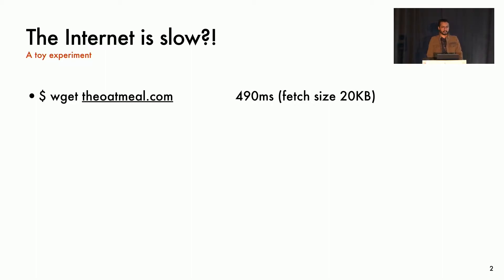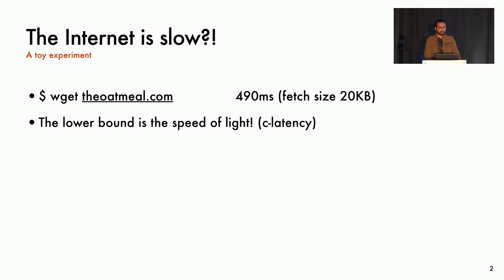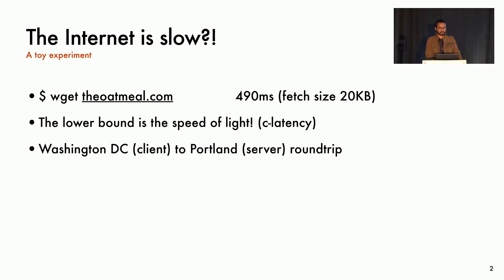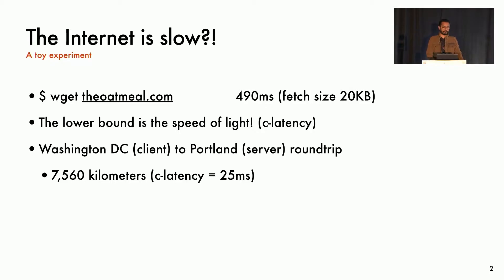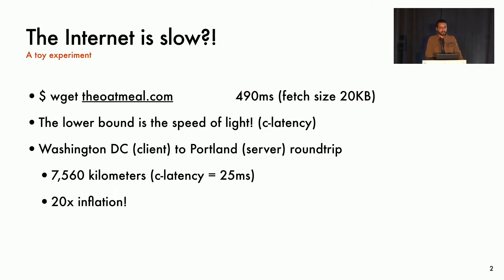But how fast could it actually have been? The lower bound of latency between two locations, as physics dictates it, is the time it takes light to make a single round trip. We call this C latency. The server for theoatmeal.com is in Portland, and my client is in Washington, D.C. That's more than 7,000 kilometers round trip, and at the speed of light in vacuum, it would take just 25 milliseconds to make that round trip. Yet it takes half a second to complete this experiment, which is 20 times the lower bound, so we see 20x inflation.